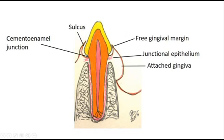This is called the free gingival margin, and the gap between the tooth and the free gingival margin is called the sulcus. This is very important, so remember this for future videos. The gum, called the attached gingiva, is really tough tissue and is attached to the bone underneath. It is able to withstand chewing and is around the bottom of the crown.